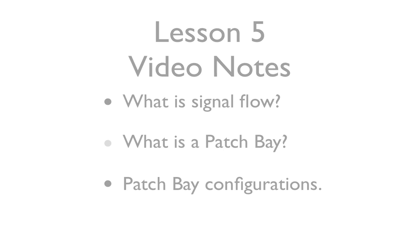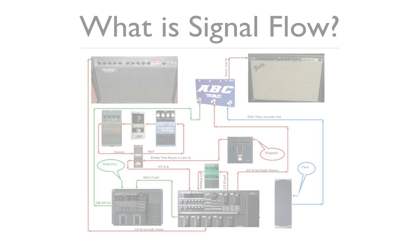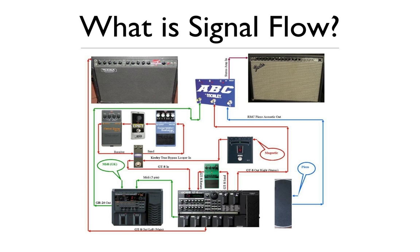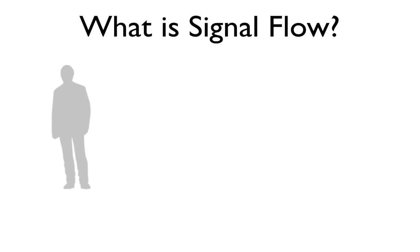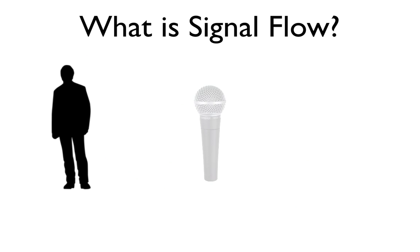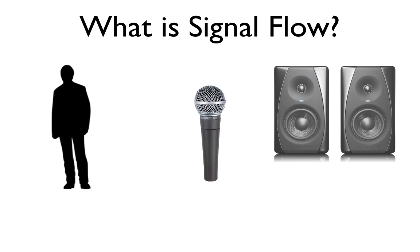All right, let's jump right into it. So what is signal flow? Signal flow is the direction of sound from sound source to sound output. An easy way of thinking about it is like a singer singing into a microphone connected to a speaker system.